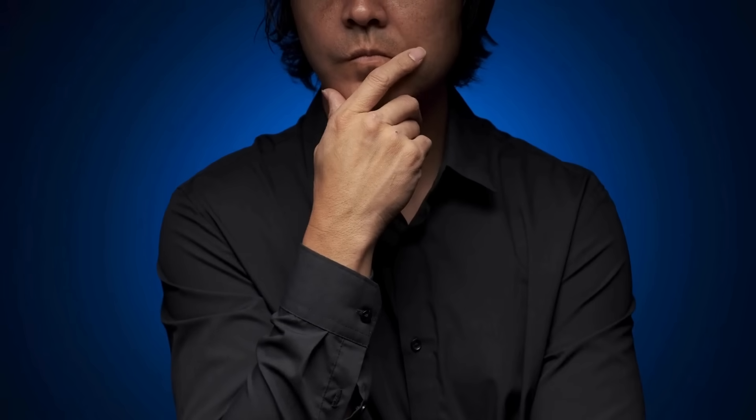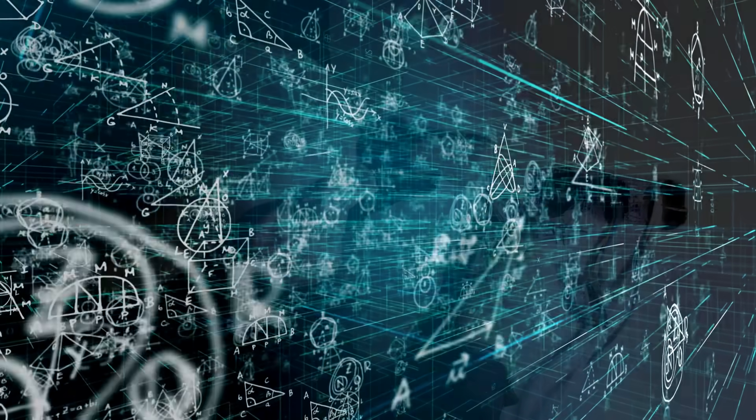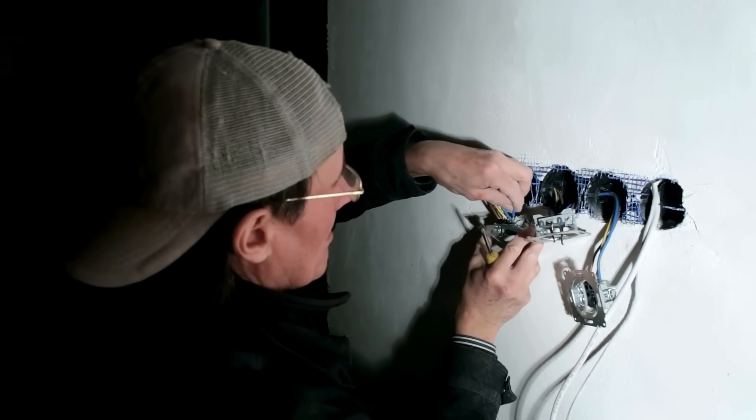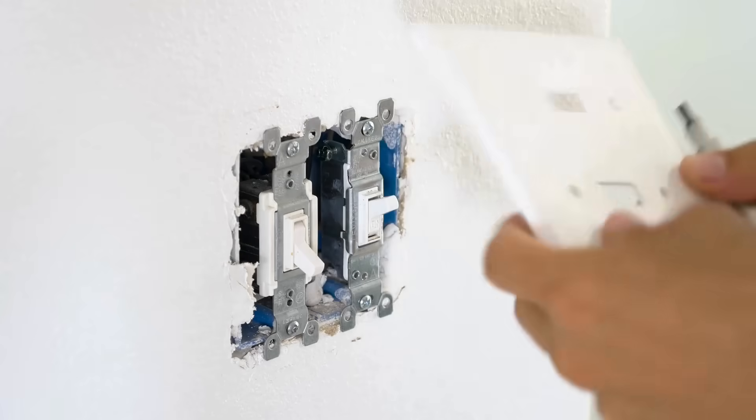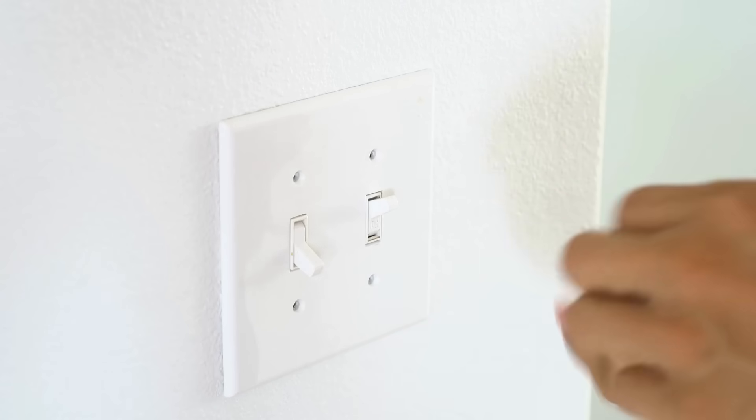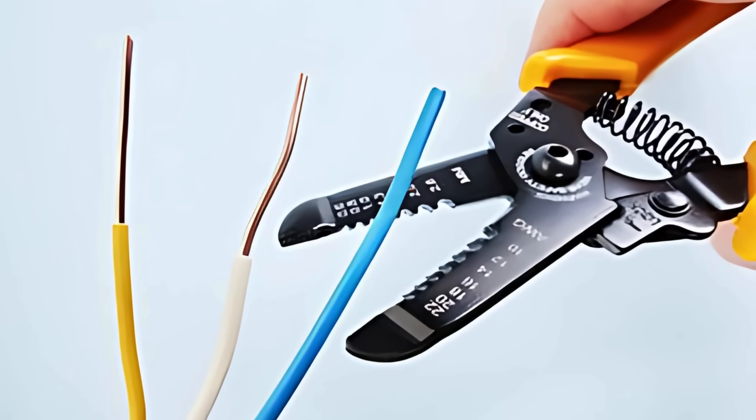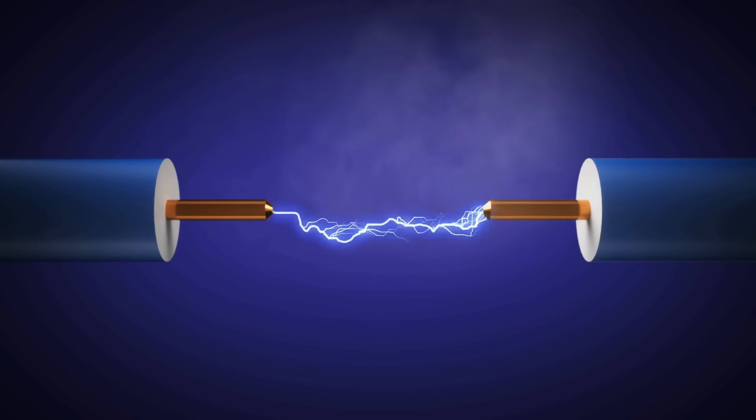So how do you know which one to choose? Here's a simple way to break it down. If your wiring is going to be stationary with minimal movement or vibration, and you're working on something like home electrical circuits, outlets, switches, or lighting, solid wire is probably your best bet. It's cheaper, easier to work with in those setups, and provides a stable, long-lasting connection.